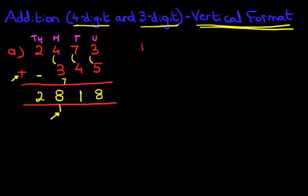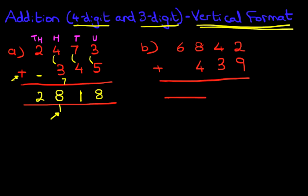How simple was that? Okay, let's have a look at another one. Okay, we've got nice big numbers here. This time the question is 6,842 plus 439. Okay, let's label the columns.